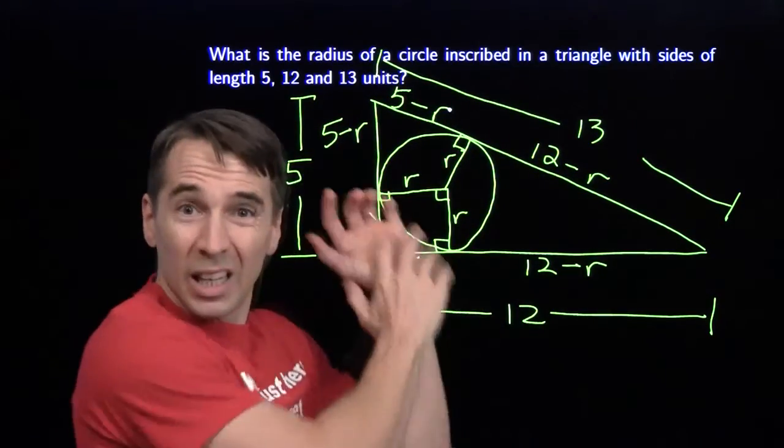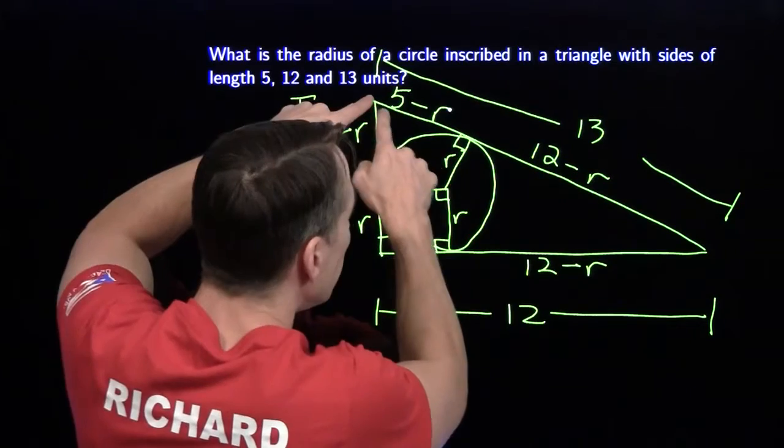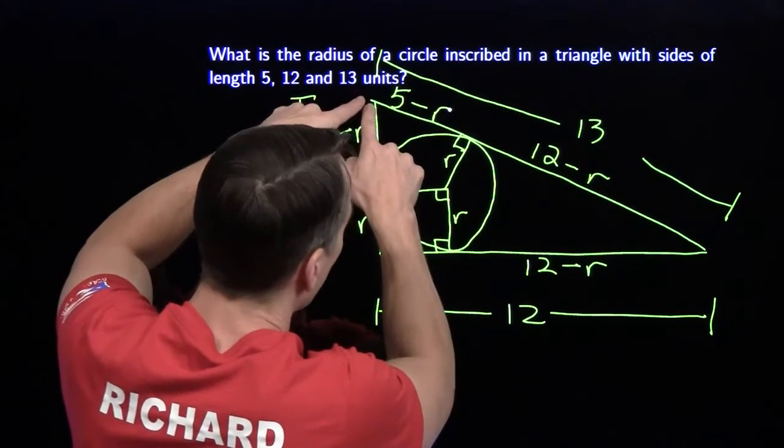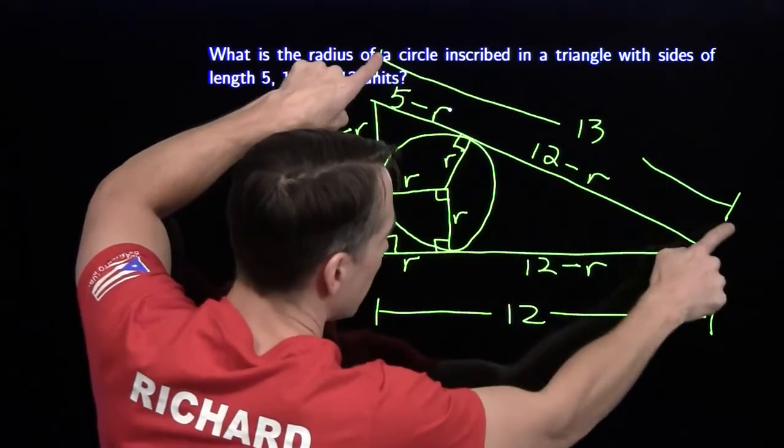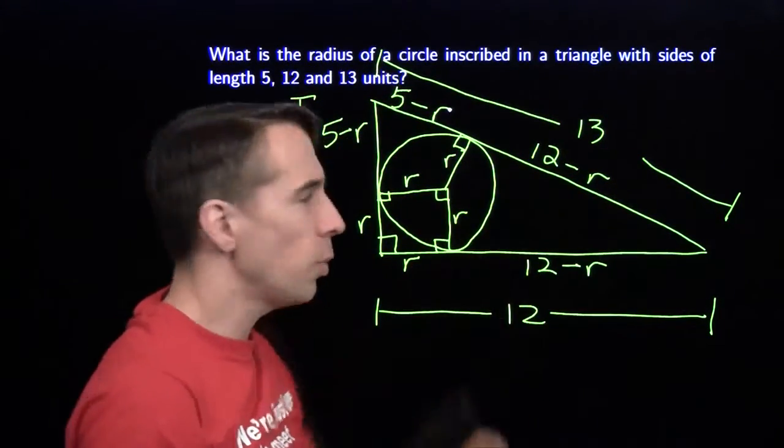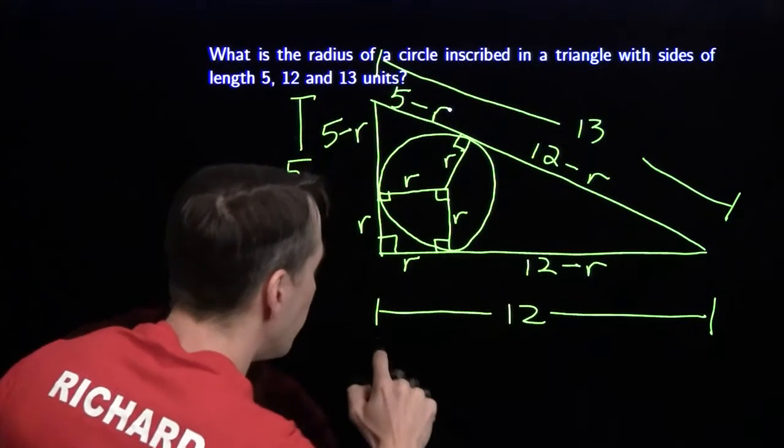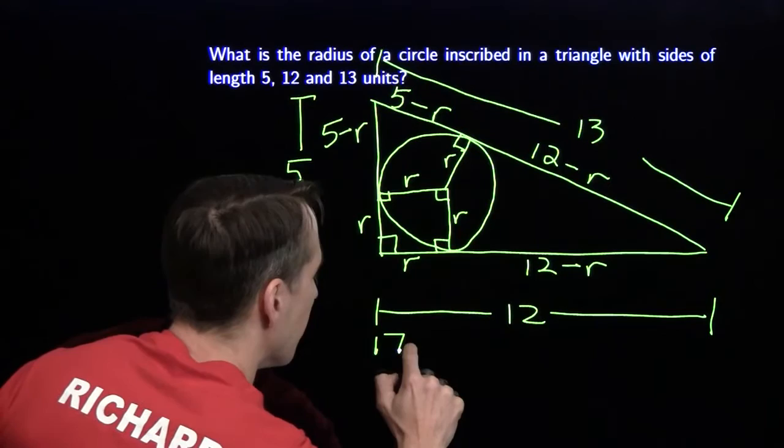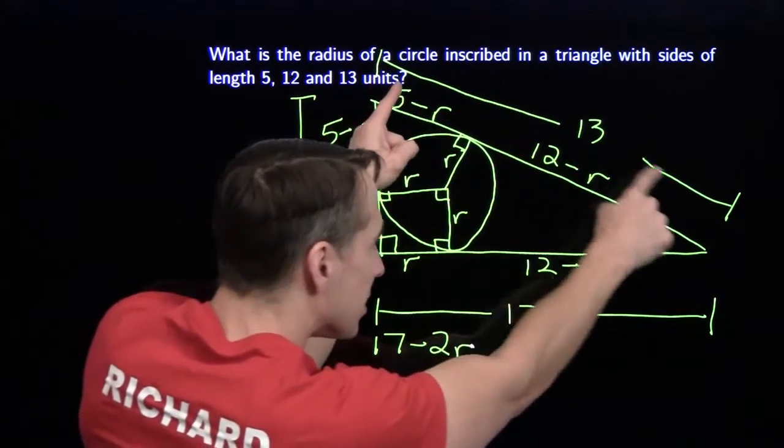One of the reasons we draw a diagram, label everything, is what we're hoping to find is two different expressions for the same thing. I've got two different expressions for this length right here. First, it's 13. And then second, it's the sum of these two. 5 minus r plus 12 minus r. So I can add these two together. 5 minus r plus 12 minus r gives me 17 minus 2r. Just adding these two together. And that has to equal 13.